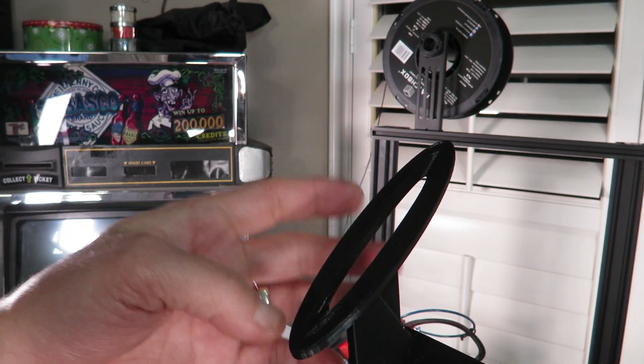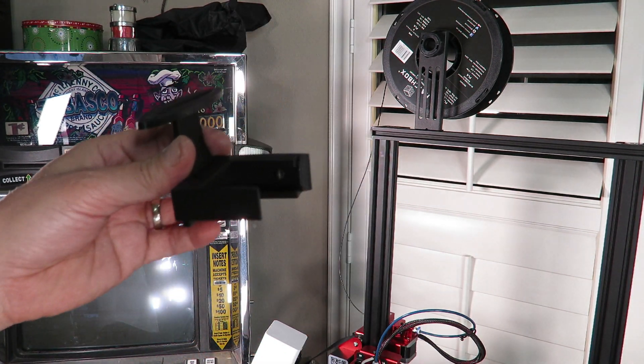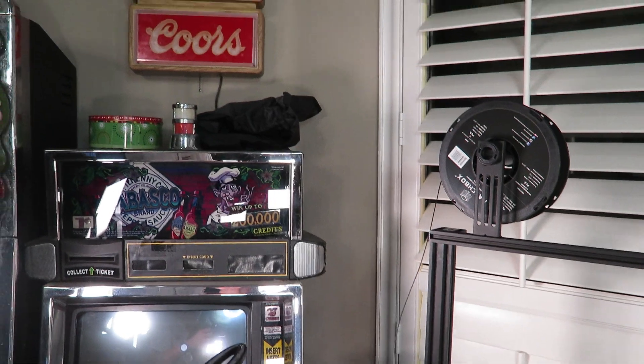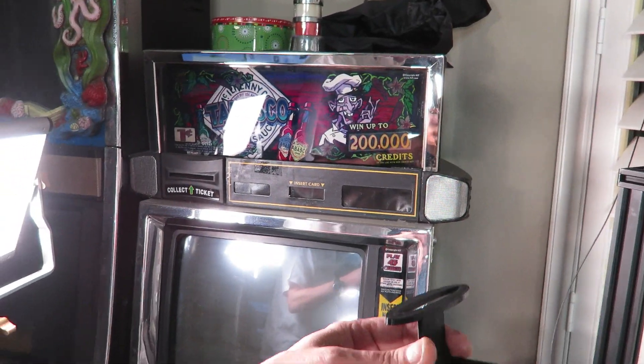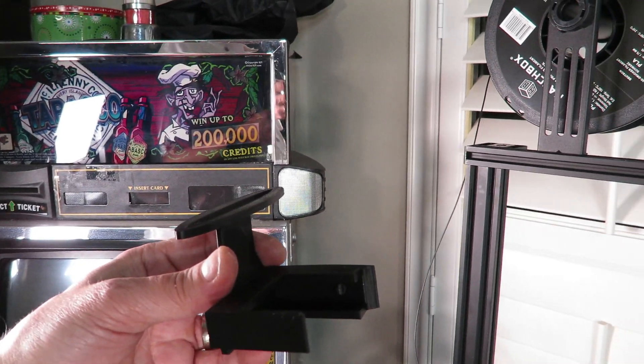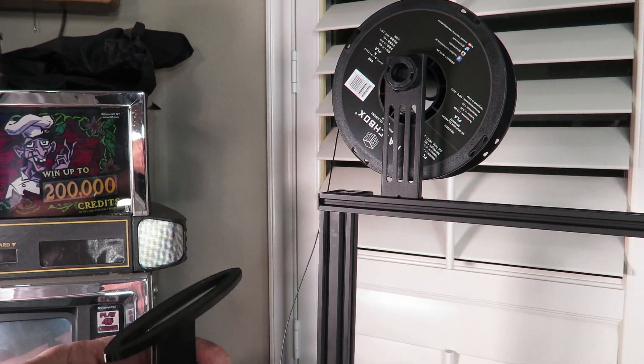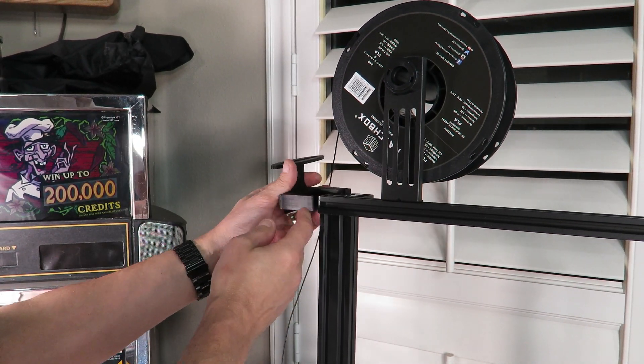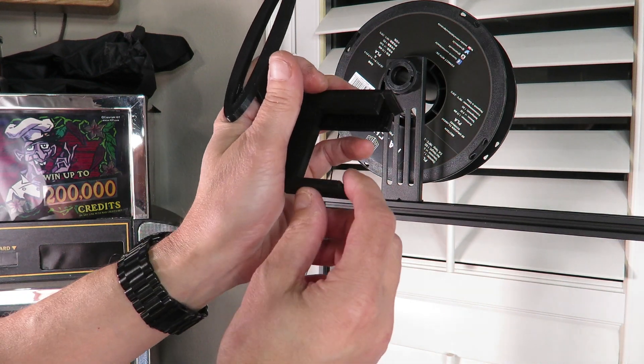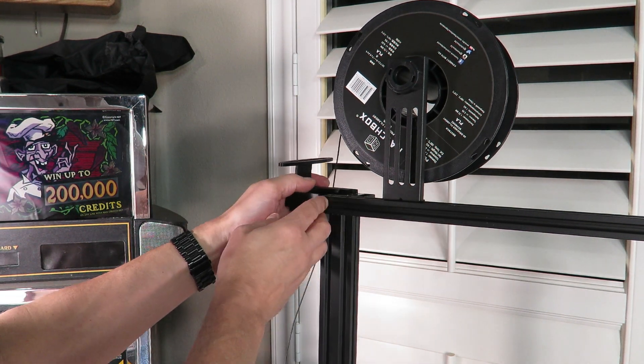This actually clips right onto the top of your CR-10S Pro. I don't have a CR-10, so it might be the same, I'm not sure how it mounts. This goes right in here, just kind of pry this lever. I put a little tab so you can pull this apart and slide that right in.